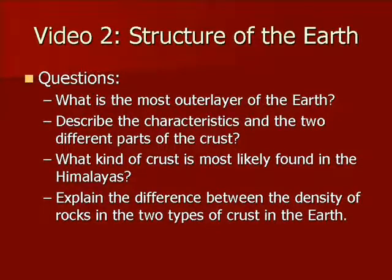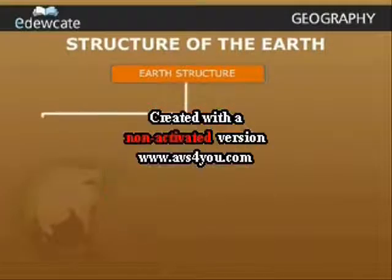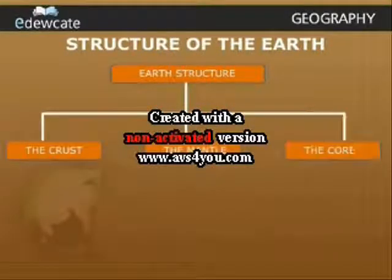The next video is titled Structure of the Earth. Write down these essential questions that you will answer by the end of the video: What is the most outer layer of the Earth called? Describe the characteristics and the two different parts of the Earth's crust. What kind of crust is most likely to be found in the Himalaya Mountains? Finally, explain the difference between the density and the two types of crust. Divide it into three important components: the crust, the mantle, and the core.